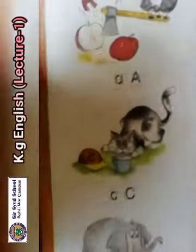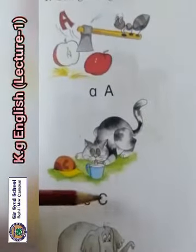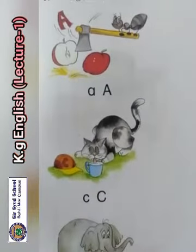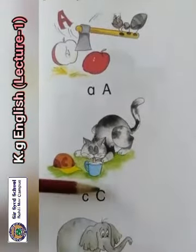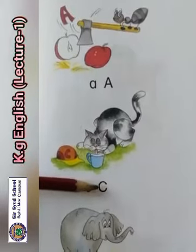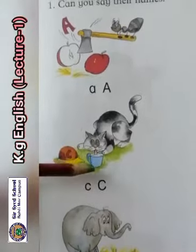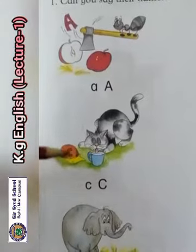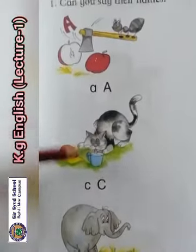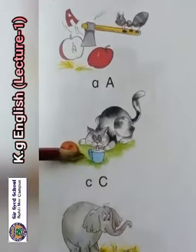The third letter is C. Capital C, small c. The sound of C is 'k'. C-ca, cat. C-ca, cup. C-ca, cap. Repeat: C-ca, cat. C-ca, cup. C-ca, cap.